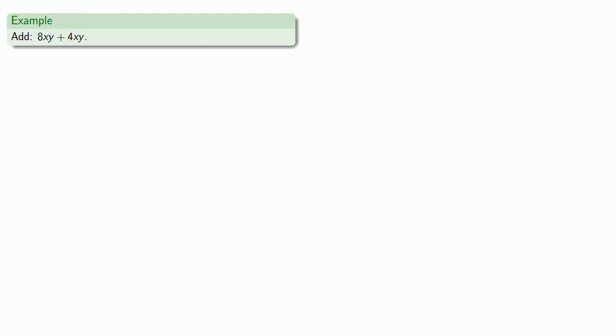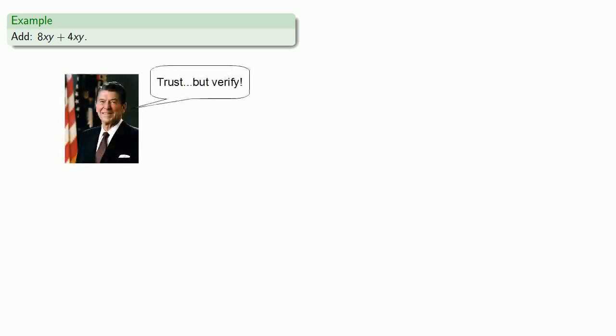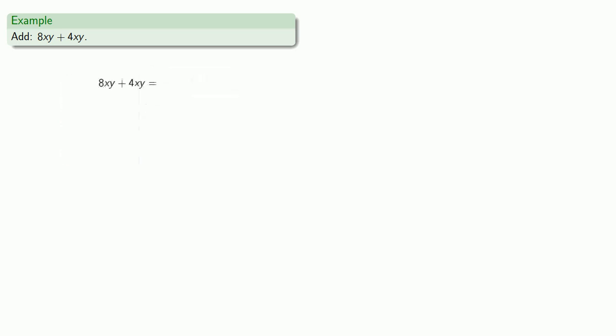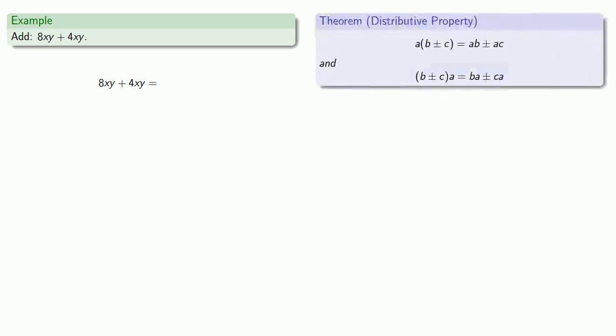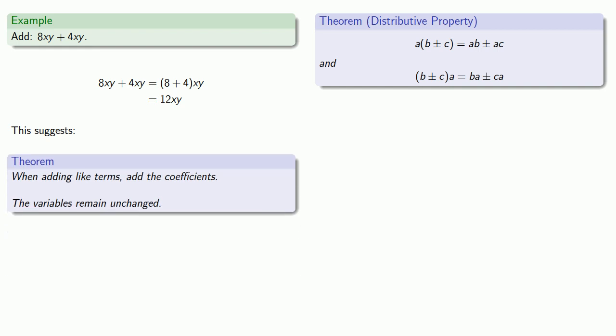For example, 8xy plus 4xy. Quick check. They both have the same variables, x and y, and they're raised to the same powers, both 1. 8 times xy plus 4 times xy. My distributive property says that I can split off the xy and leave the other terms inside the parentheses, 8 plus 4. But I know what 8 plus 4 is. That's going to be 12. So when I add these two expressions, I get 12xy. This suggests a very useful thing. When adding like terms, add the coefficients. The variables remain unchanged.